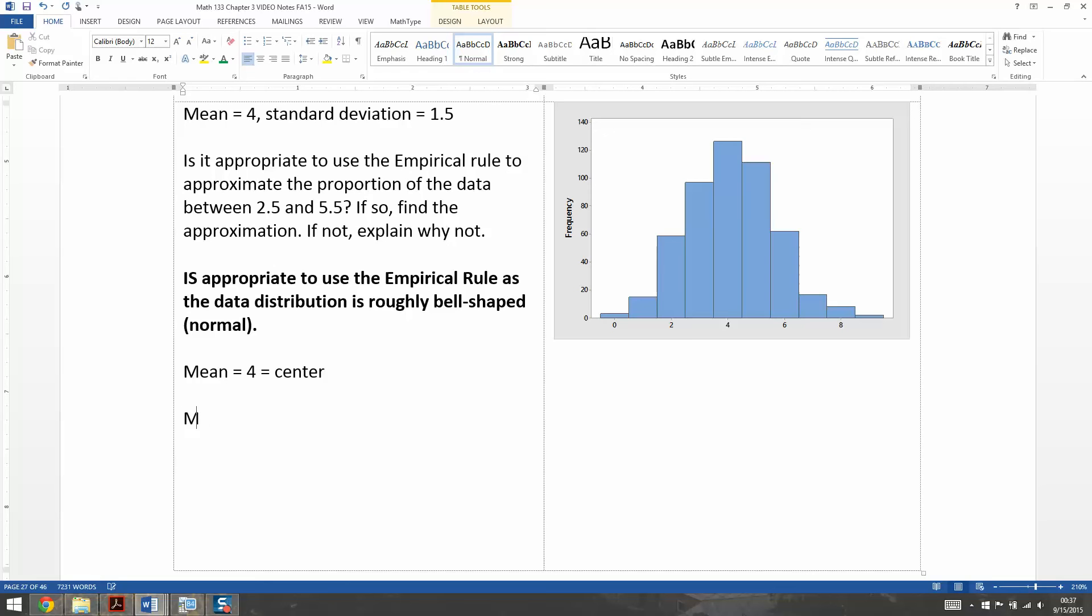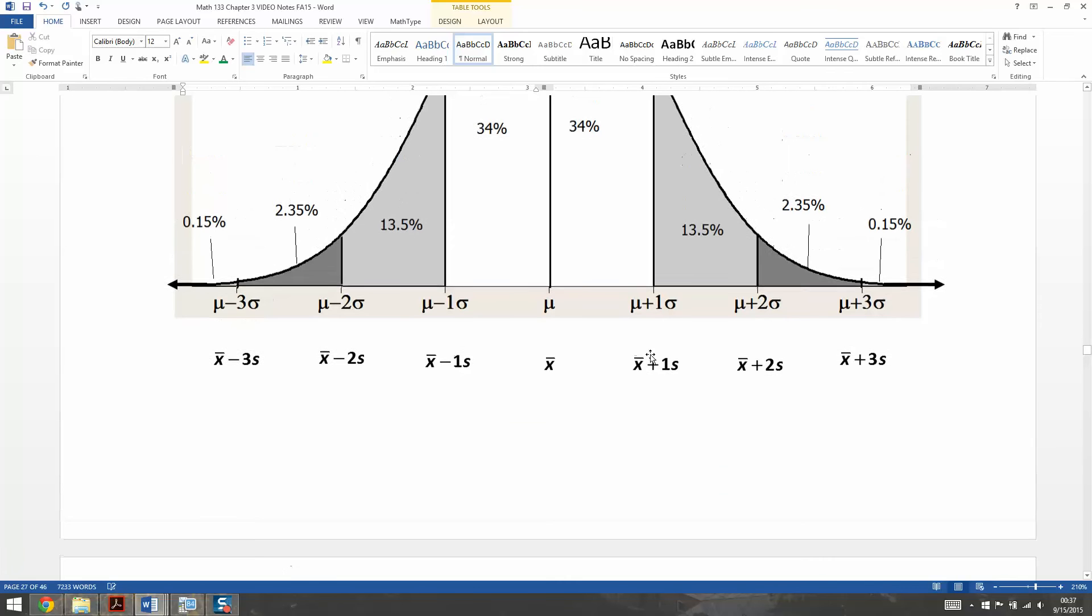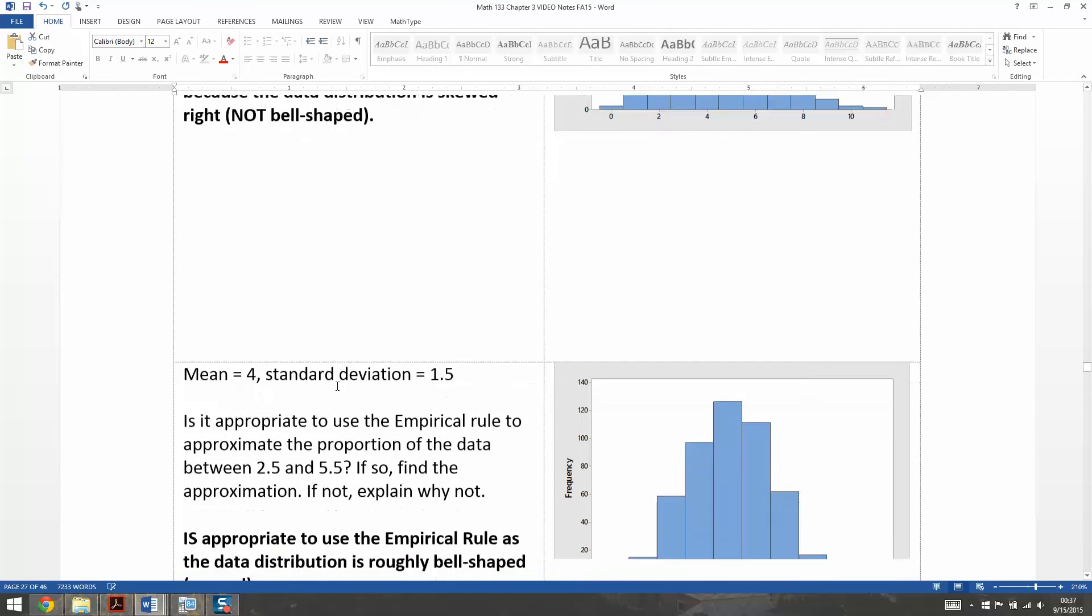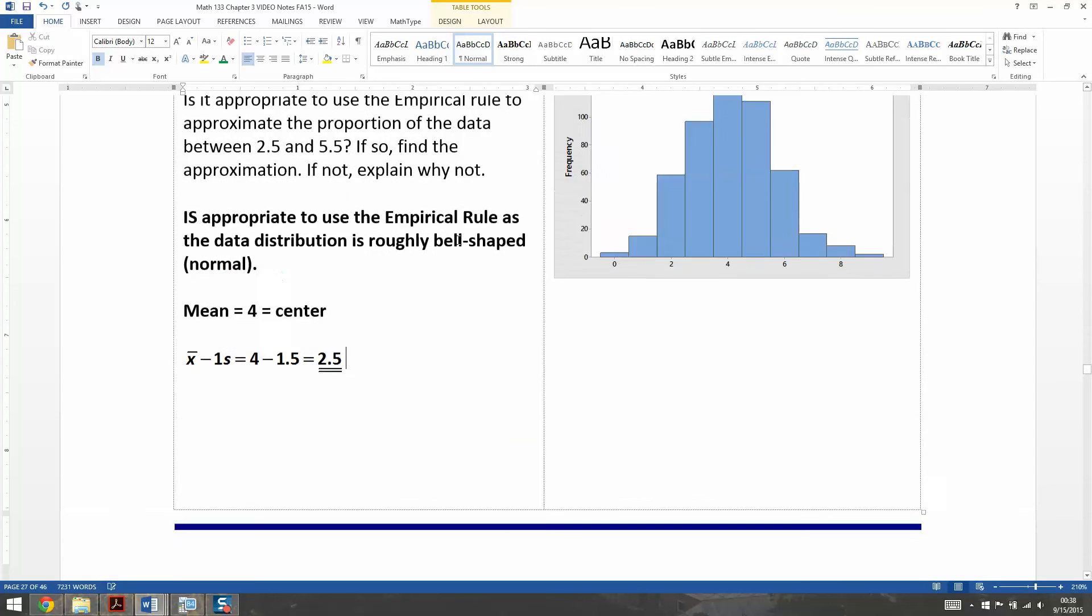Let's go back down here and figure that out. We know that the mean is the center, which is 4. So let's take the mean and take away one standard deviation. The mean take away one standard deviation - that would be equal to 4 take away 1.5, which is equal to 2.5. Well, yay. That's what we wanted, 2.5. That's one of the numbers that we need. So that's good.